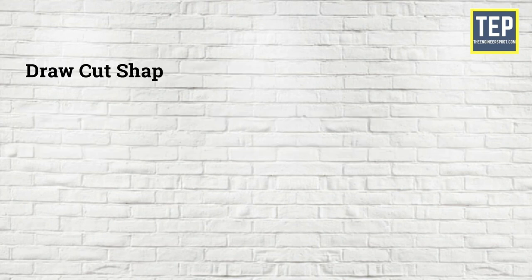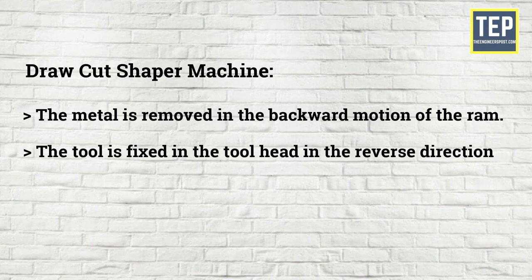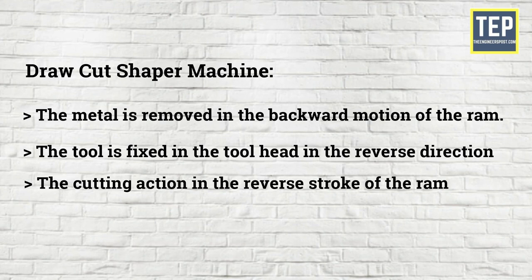Draw Cut Shaper Machine: In these types of Shaper Machines the metal is removed in the backward motion of the RAM. In this Shaper, the tool is fixed in the tool head in the reverse direction so that it provides the cutting action in the reverse stroke of the RAM.